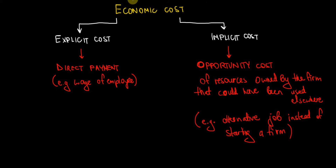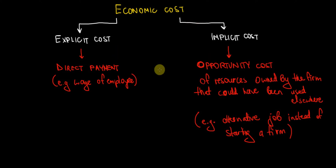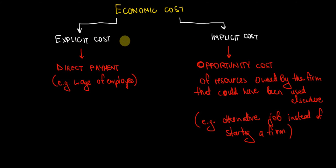In this video I'd like to introduce the concept of economic cost. I already wrote here everything that's necessary for me to go through the content, so I will just describe in a bit more detail what I've written so far. As you can see, I wrote here two types of costs: explicit and implicit costs. What is the difference between them and why do we have to keep it in mind?